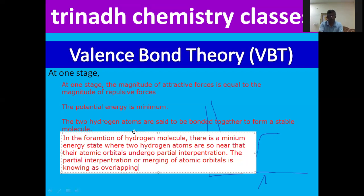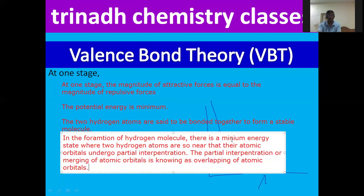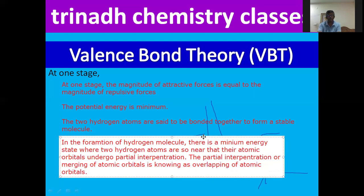These are some of the theoretical non-mathematical concepts in valency bond theory. In my next video, we will discuss various types of overlappings and the formation of sigma bond and pi bond. Thank you for watching Tranad Chemistry Classes. Please like the video, share and subscribe the channel.